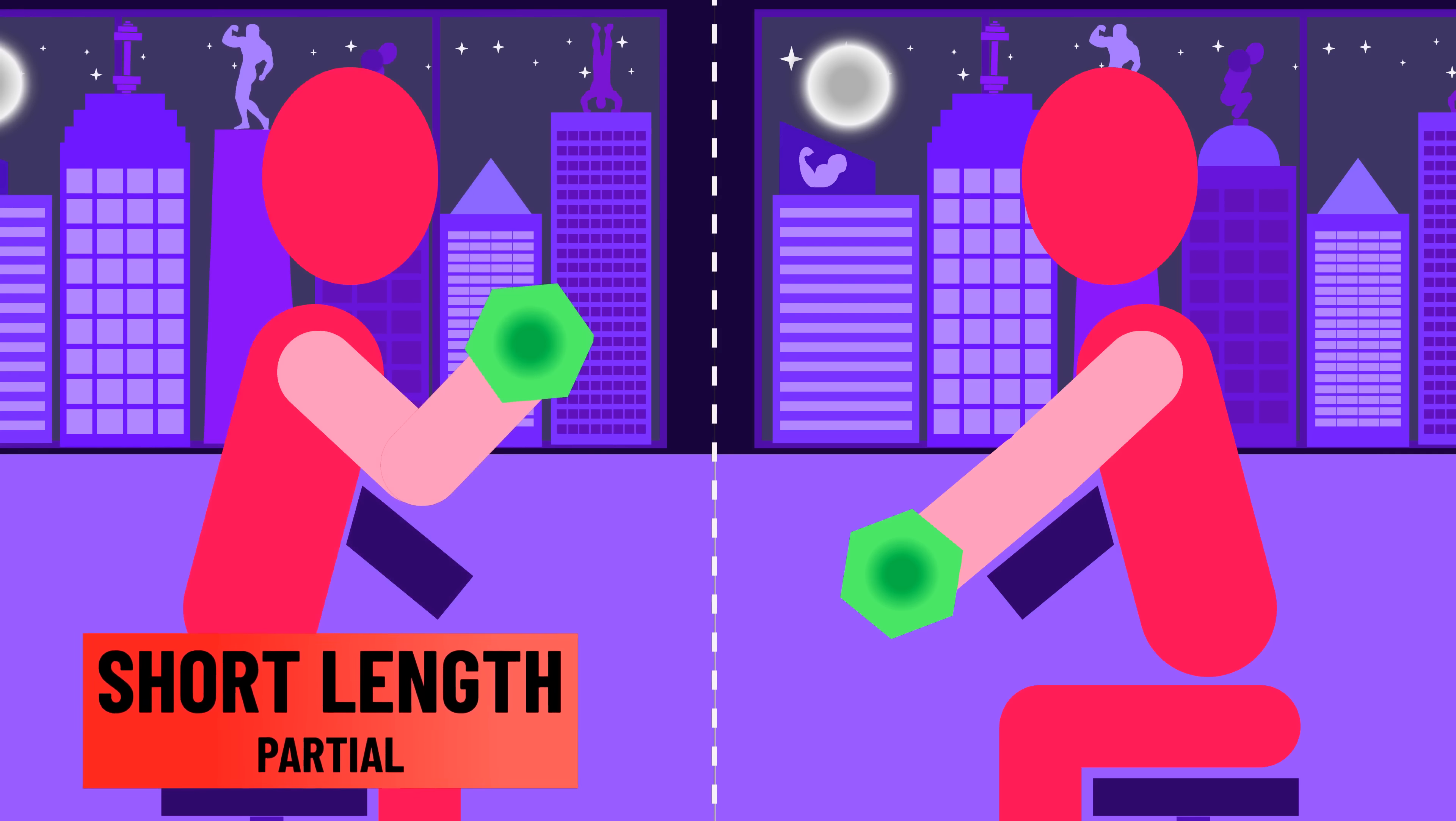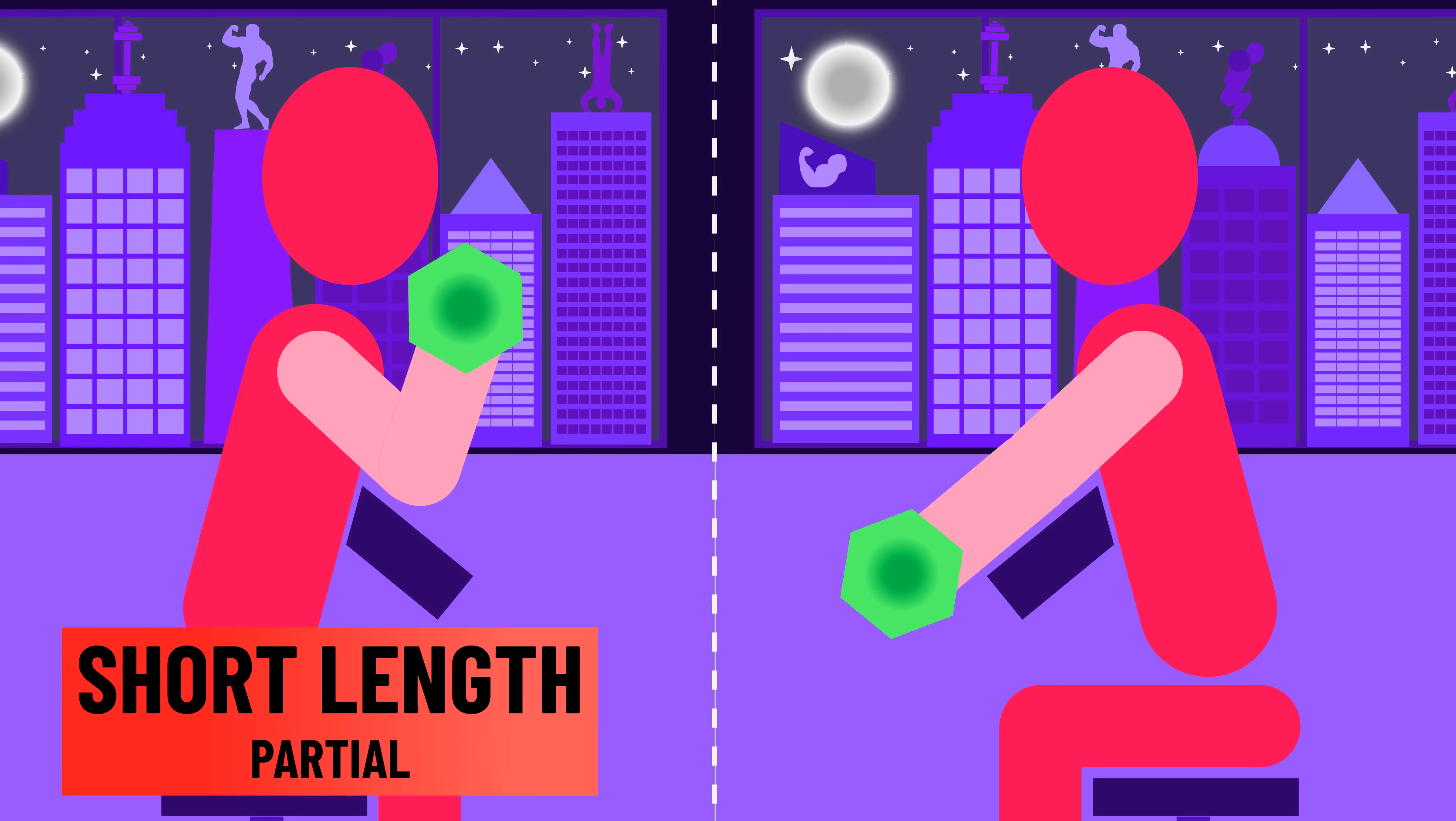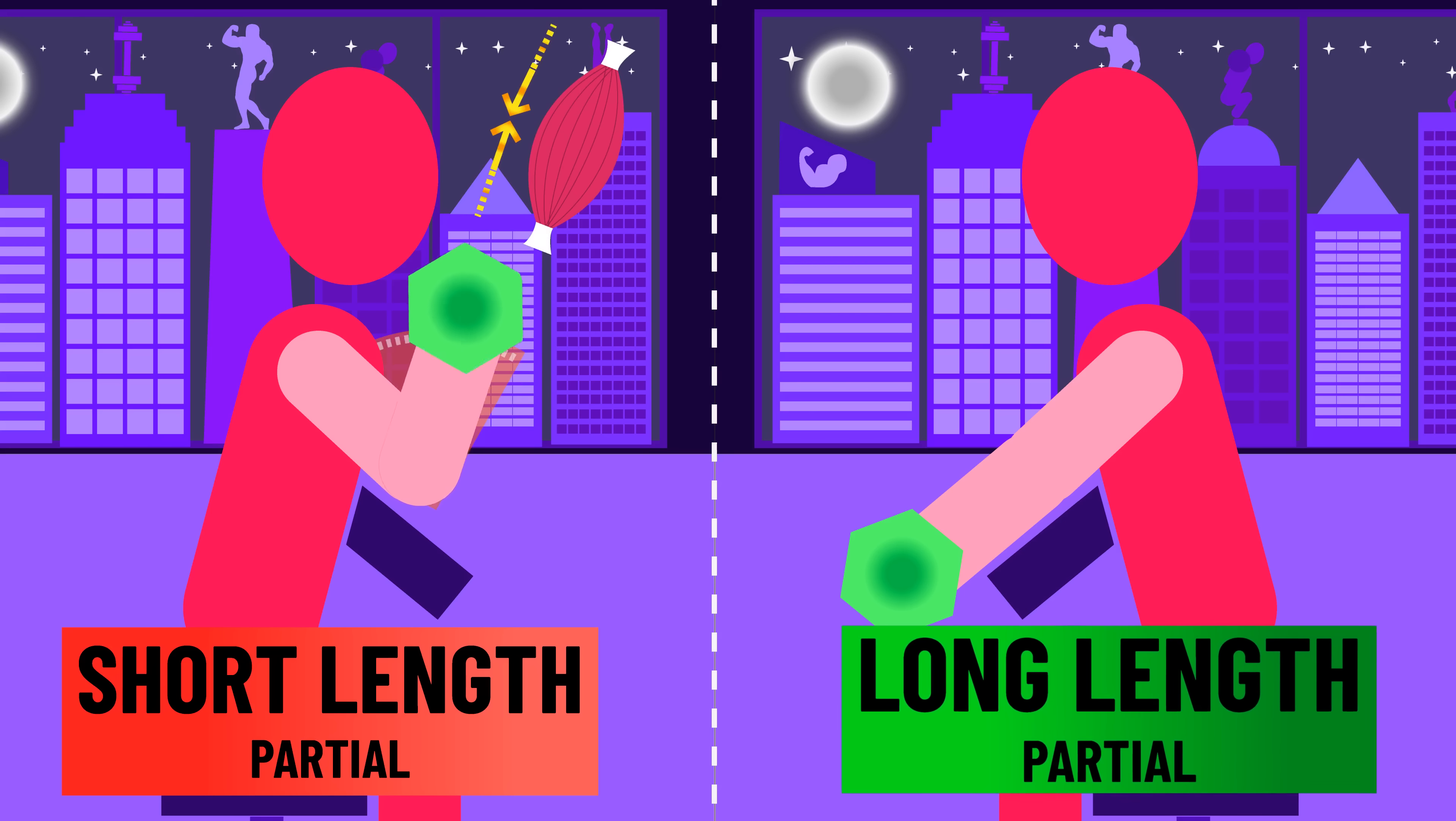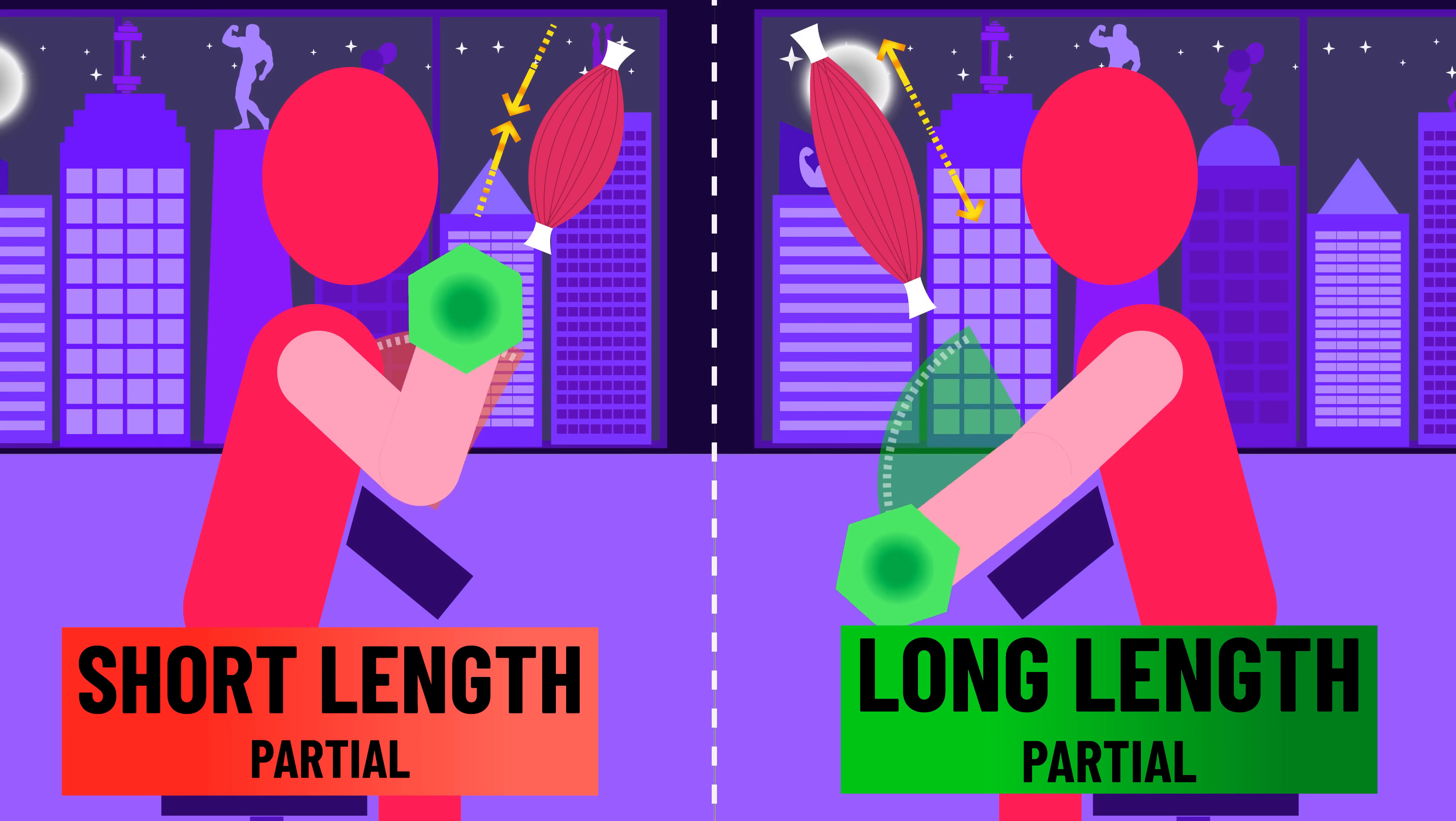It is possible to use a partial at short muscle lengths, where you move through the half where the muscle is at a shorter length, or a partial at long lengths where you move through the half where the muscle is at a longer length. Are these any better?